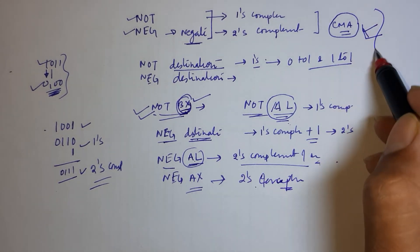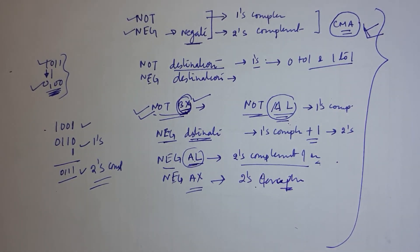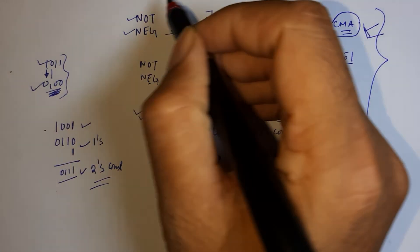So basically this is working of NOT and NEG in 8086 microprocessor.